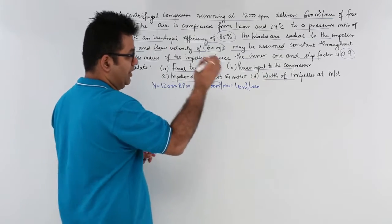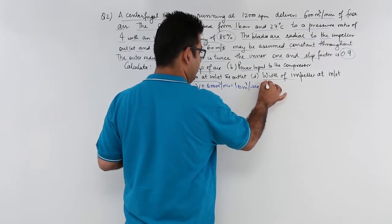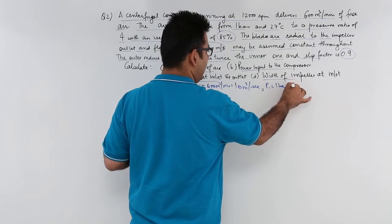The air is compressed from 1 bar. So P1 is 1 bar. How many kPa is this? This is 100 kPa.